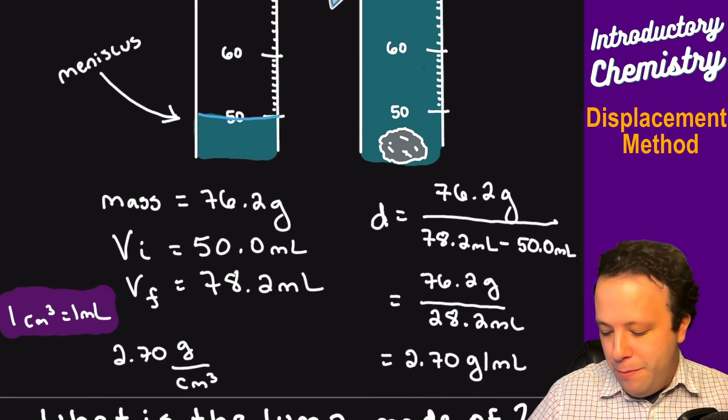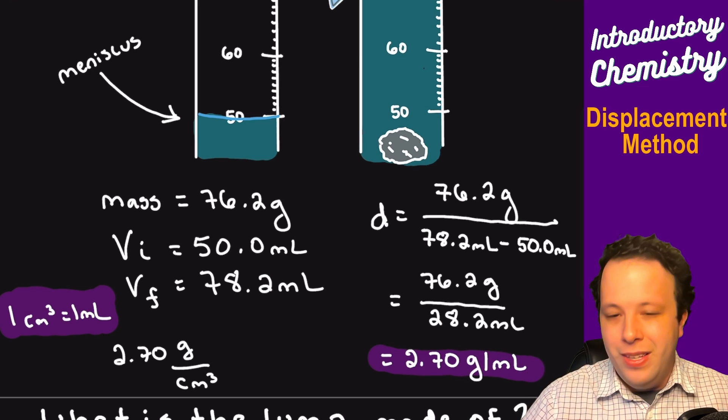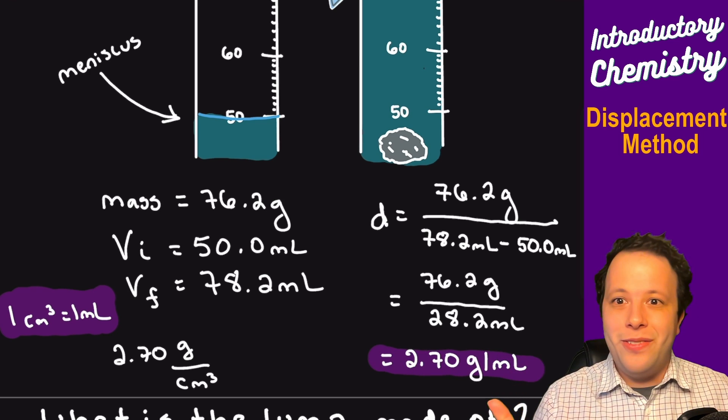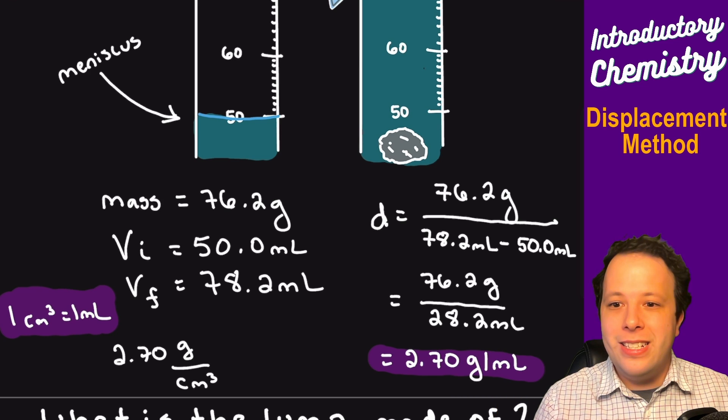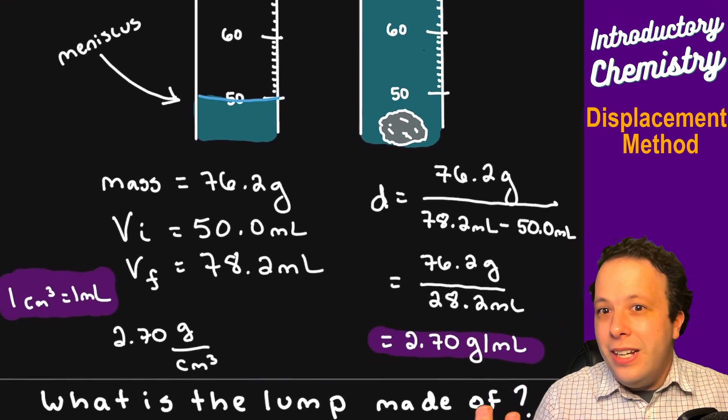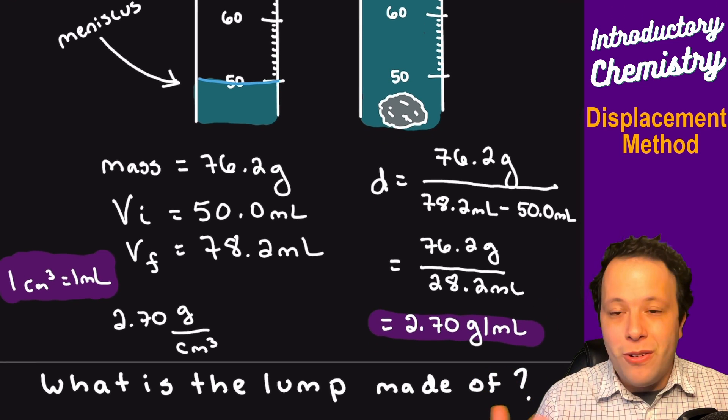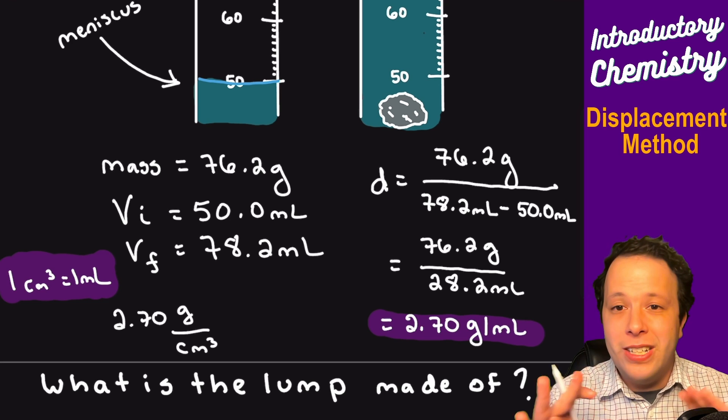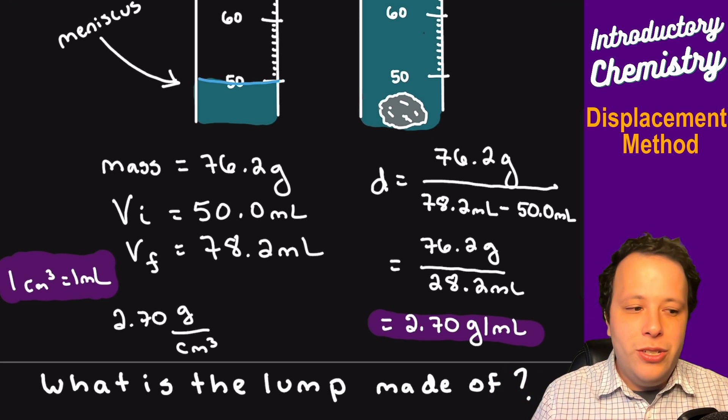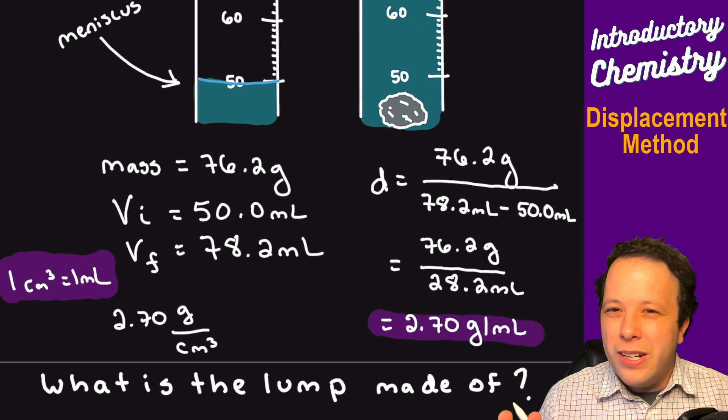So 2.7. What does that mean? What can we do with that piece of information? Well it allows you to try to identify what it is. Remember density is an intrinsic property. It's unique for most substances. That's generally a different value. You can use it to try to eliminate or figure out what could it be.